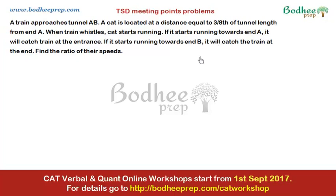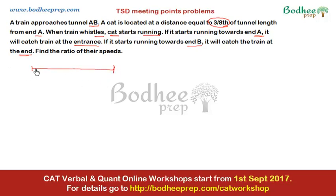The next question appeared in CAT 2004 or 2005. A train approaches a tunnel AB, and a cat is located at 3/8 of the tunnel length from point A. When the train whistles, if the cat runs toward point A (the entrance), the train catches it at the entrance; if it runs toward point B (the exit), the train catches it at the exit. We need to find the ratio of their speeds.